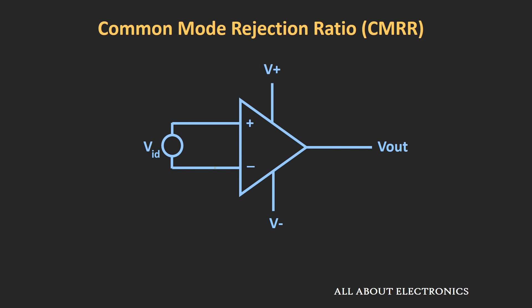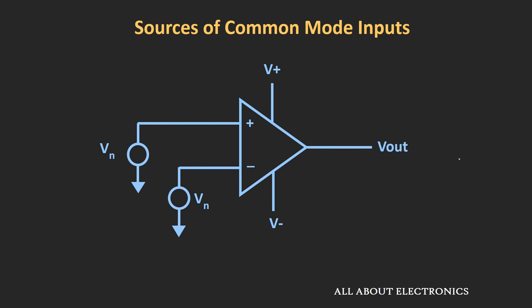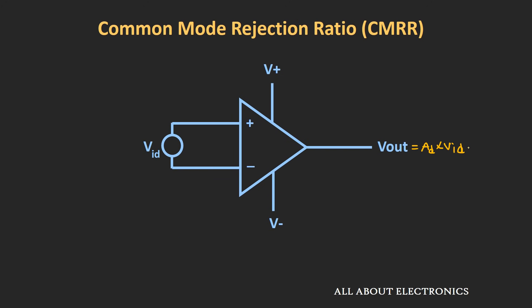Now, suppose if we apply the differential input signal to this op-amp, the output ideally should be equal to the differential gain multiplied by the differential input voltage. But because of common mode input signals, you will see another term in the output — that is common mode gain multiplied by the common mode input signal. This term basically represents the common mode output voltage which appears at the output side. For any op-amp, this term should be as minimum as possible, meaning the op-amp should be able to suppress the common mode input signal which is present at both input terminals.